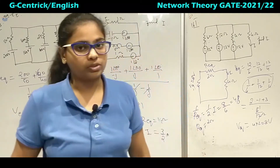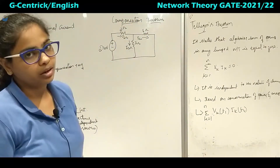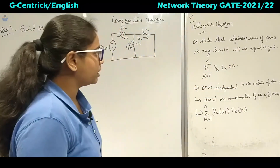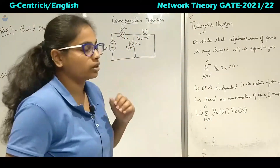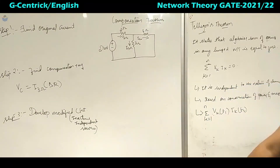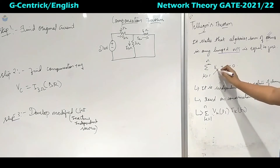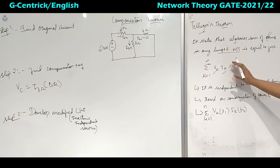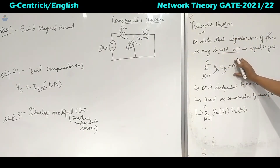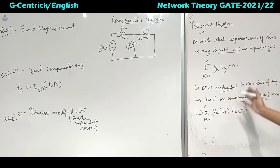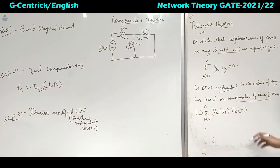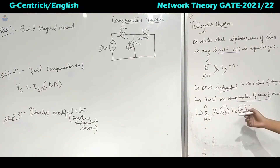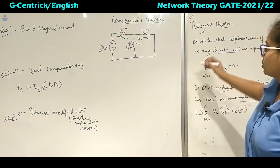In the next lecture we cover Tellegen's theorem and compensation theorem. Tellegen's theorem states that the algebraic sum of power in any lumped network equals zero: sum of VK × IK from K=1 to N equals 0. This represents conservation of power and energy. It is independent of the nature of the elements — bilateral, unilateral, or any type. It holds for varying voltage and current at any time period T1 or T2. This theorem is not important from a GATE exam perspective but is useful for interview knowledge.